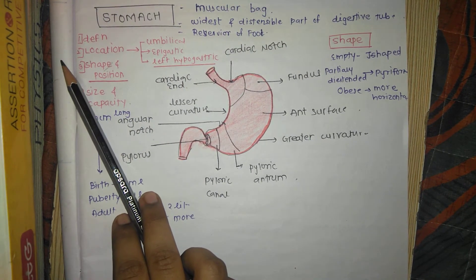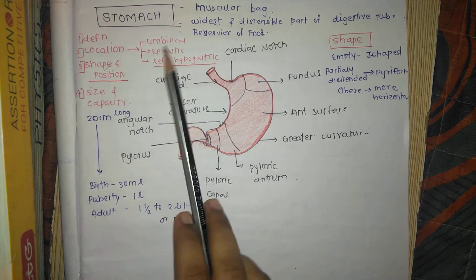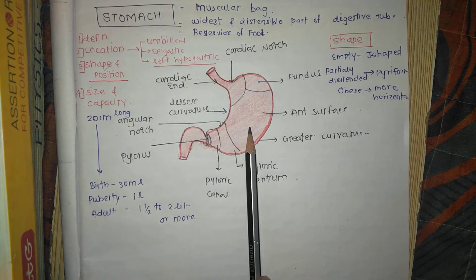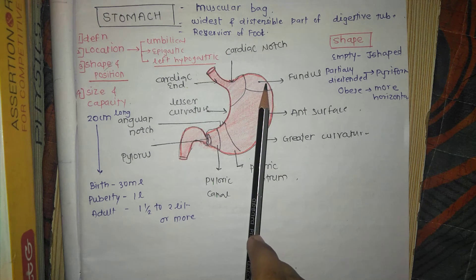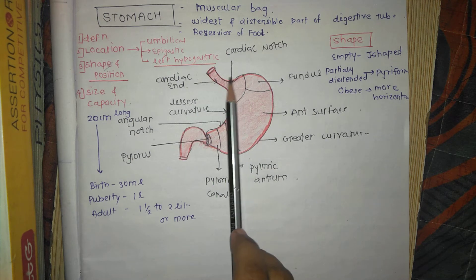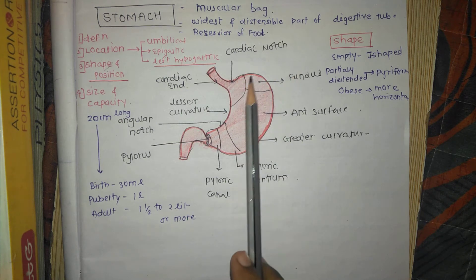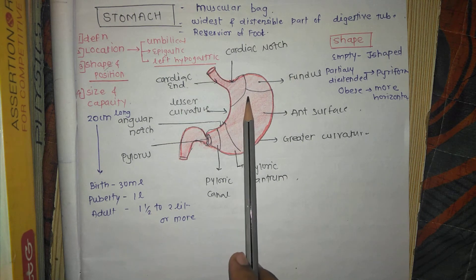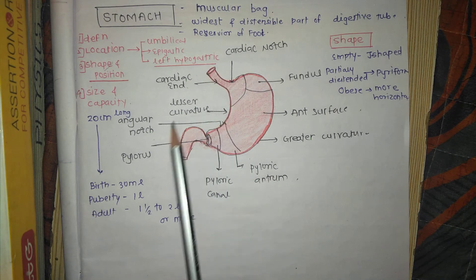The stomach: the definition of the stomach. The stomach is the muscular part which is the widest and distensible part of the digestive tube. It is a reservoir of food; it digests carbohydrates, proteins, and fat.